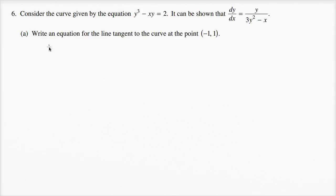The line has the form y = mx + b. m is the slope and equals dy/dx at that point. When x = -1, y = 1.